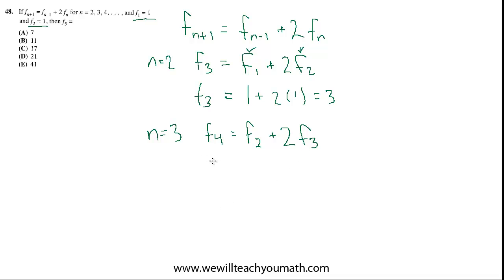plus 2 f3. And now we plug in again. So, f4 equals f2, which is 1, plus 2 times f3, which we just found, which is 3. So, that's 7.